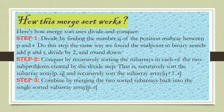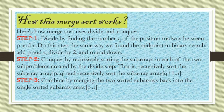First we find the mid index of the array. If p is the first index and r is the last index, then q equals (p + r) / 2. We divide the array into two halves, then divide each sub-list further until we get one element in each. Then we conquer by recursively sorting the sub-arrays: the first sub-array p to q, and the second sub-array q+1 to r. Finally, we merge those sub-lists until we get one complete sorted list.